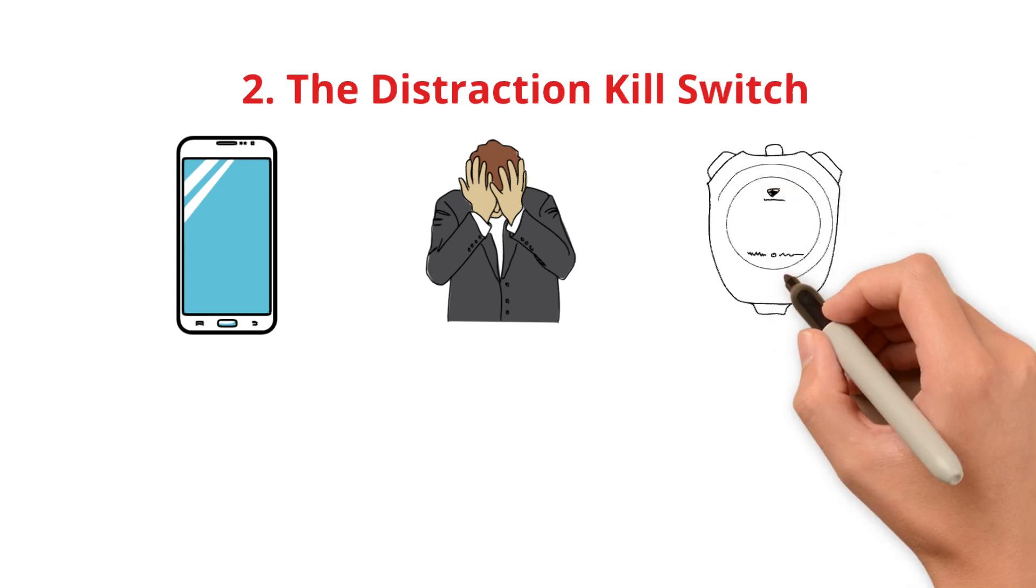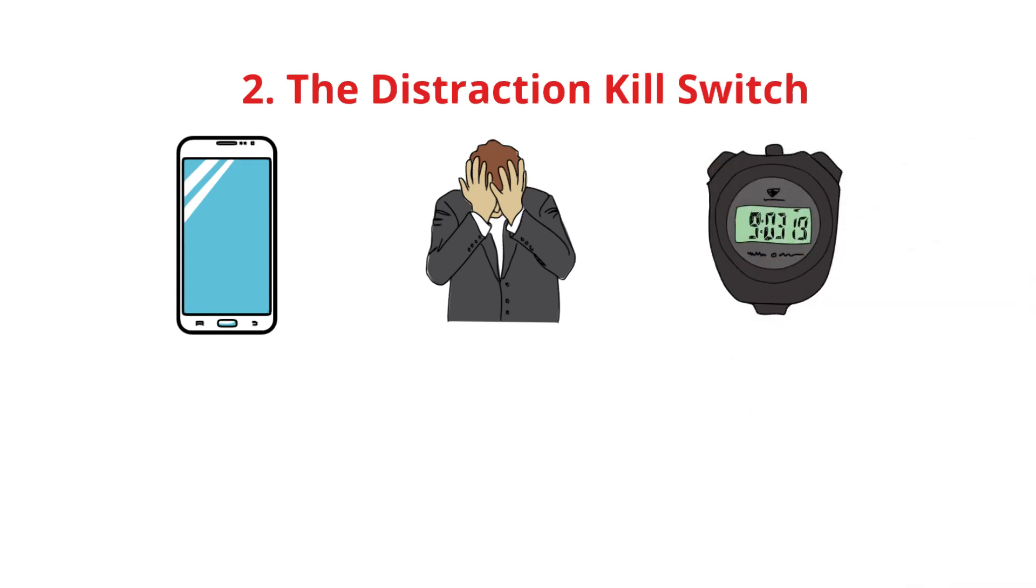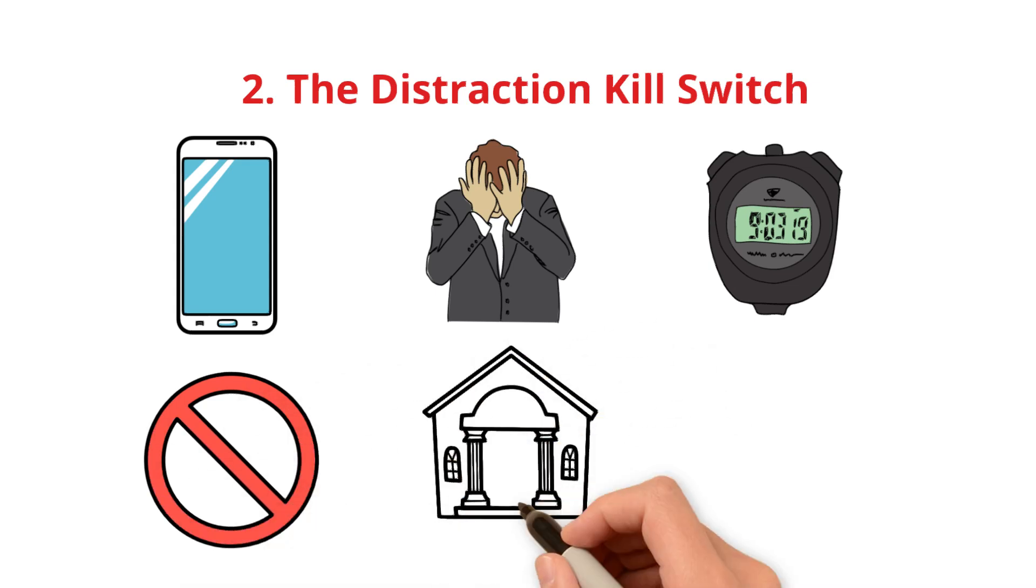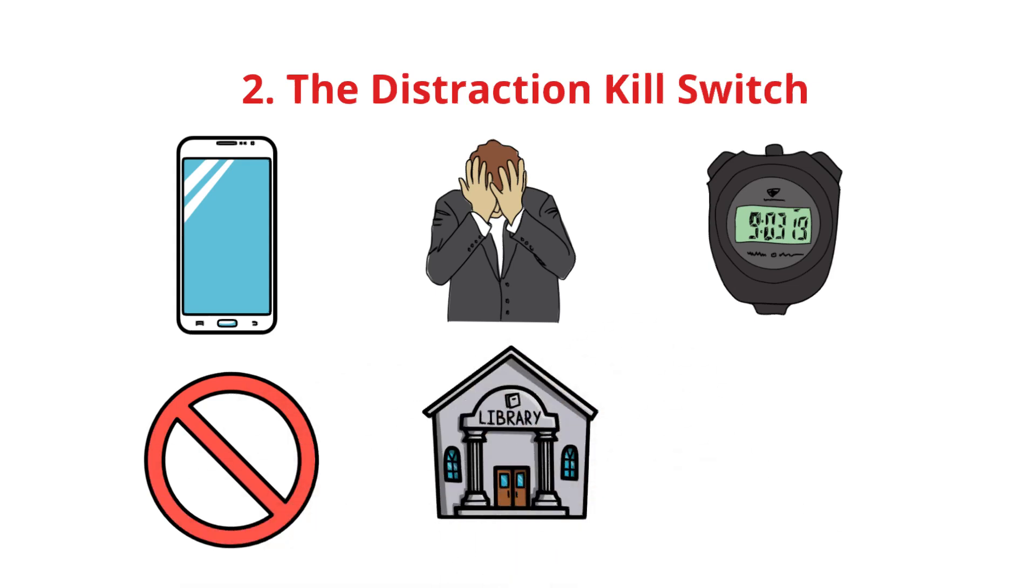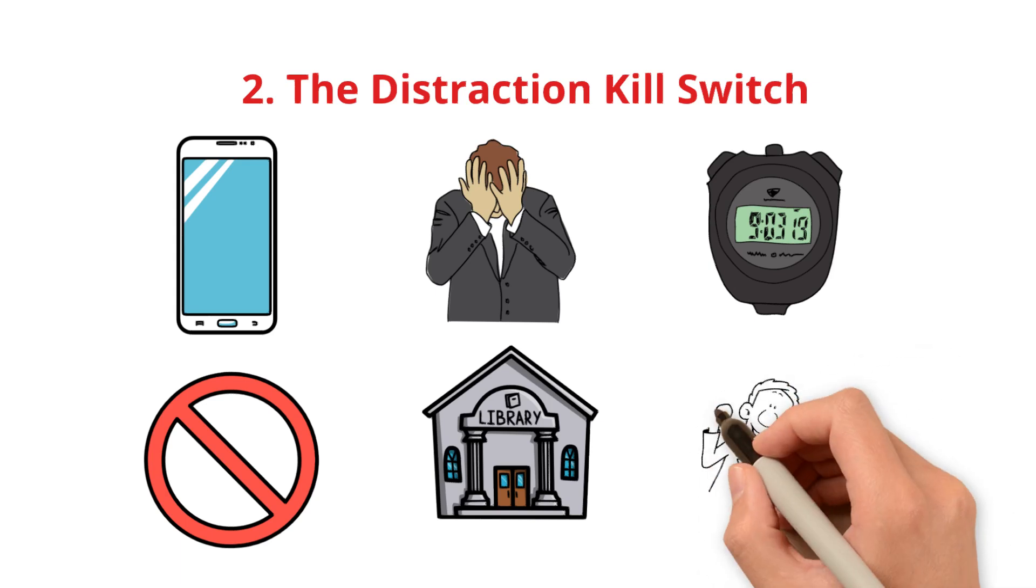Use the 5-minute phone rule. Set a timer for 5 minutes. Scroll guilt-free. Then put your phone away before studying. Use website blockers. Change your environment. Study in a different room or a library. Your brain takes 23 minutes to refocus after every distraction. Eliminate them, and your productivity will skyrocket.